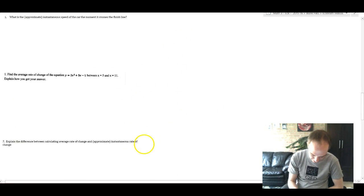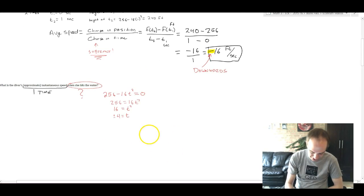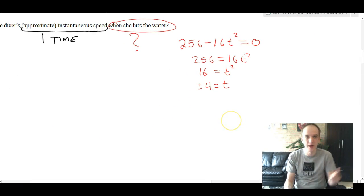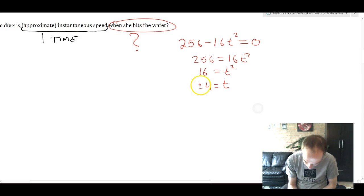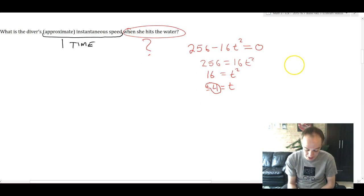We know that we're talking about positive time because we're in a word problem story. So we're going to say that 4 is the time that she hits the water. If we want to find her approximate instantaneous speed, just like when we did an average, we're going to need two times.